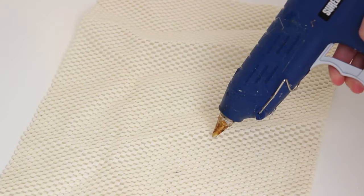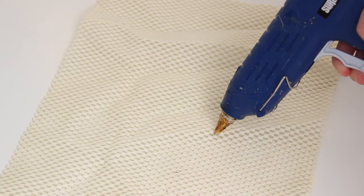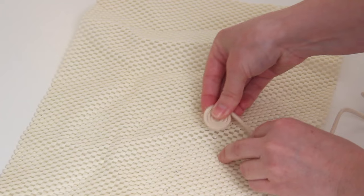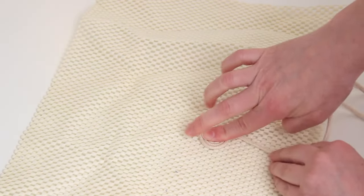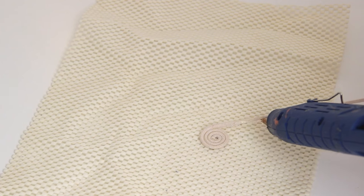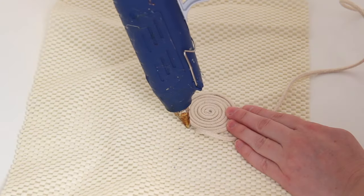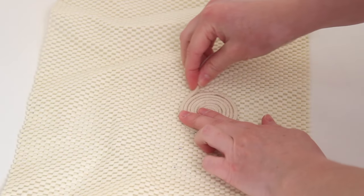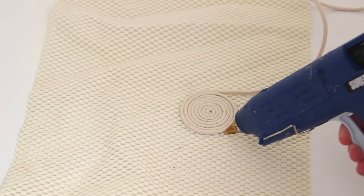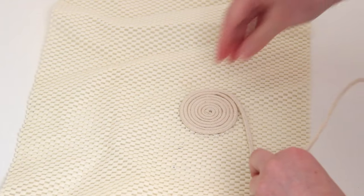Then I picked that up and I added a little bit of glue to the shelf liner and then I glued that started spiral down. Now you can add a little bit of glue to the cord itself and wrap it around itself again, and then you can start gluing right down onto the shelf liner or whatever base you're using.